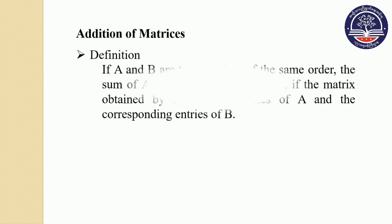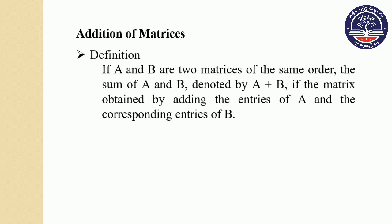The model definition is: if matrix A and B are two matrices of the same order, then A addition B, that is A+B, is the matrix obtained by adding the entry of A and the corresponding entry of B, then we get a matrix of the same order.